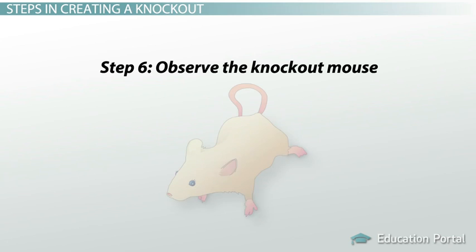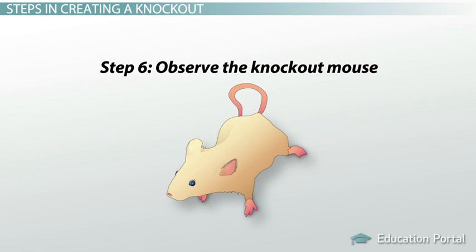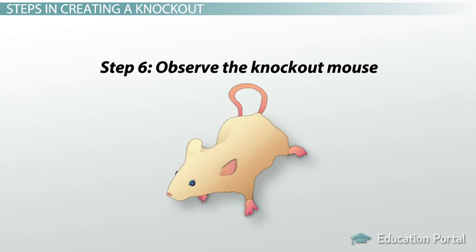We'll look for all kinds of phenotypic or physical changes. The mouse might not live to adulthood, or might be fine. The mouse might have specific health problems like weight gain or heart disease. What we observe will help tell us what the UFO gene actually does in a mouse.